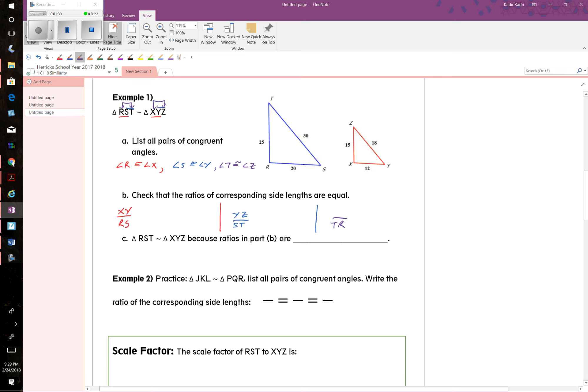Okay, let's go back to the first side. RS to XY: RS is 20, XY is 12, and that reduces to three-fifths as a fraction or six-tenths as a decimal. Going to the second side, ST is 30, YZ is 18, and that reduces to also three-fifths or six-tenths as a decimal.